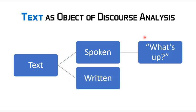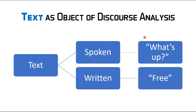The second type of text is written text — any writing in written form. Both spoken text and written text are included in the classification of text.